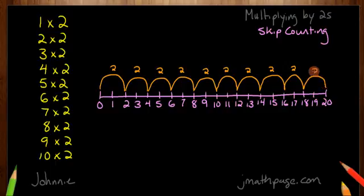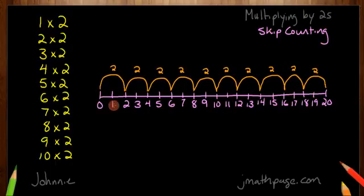Now what's good about this is we can think about this continuing and going on. But for today, this should be enough for us. So we can see that I'm counting by 2's: 1 two, 2 twos, 3 twos, 4 twos, 5 twos, 6 twos — just like my list over here.